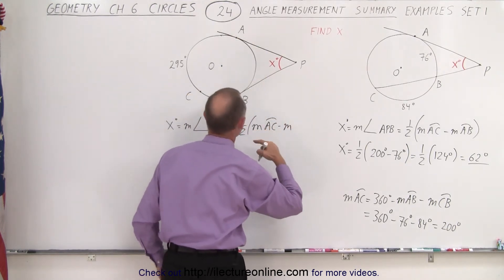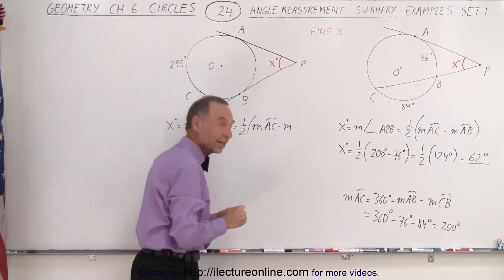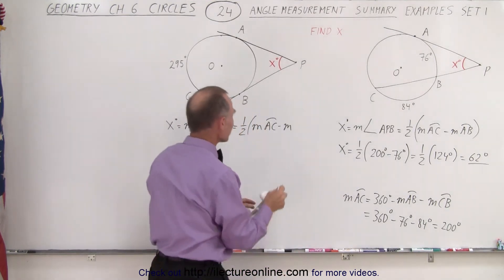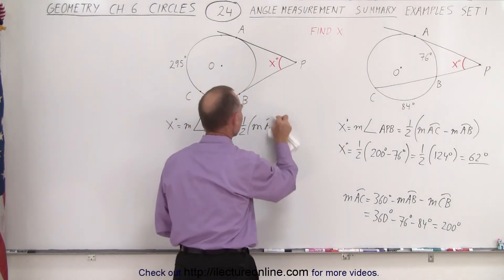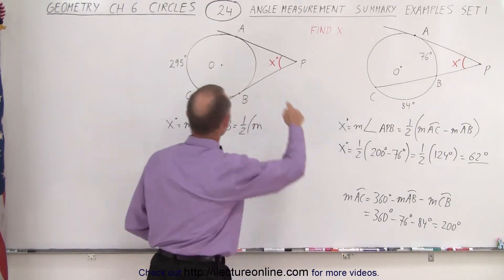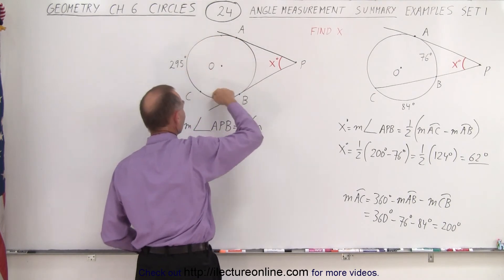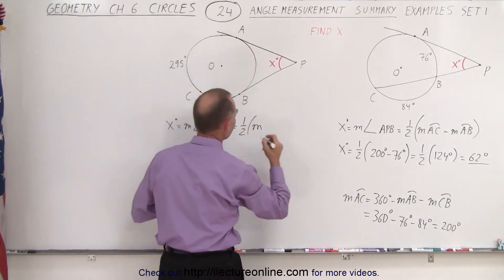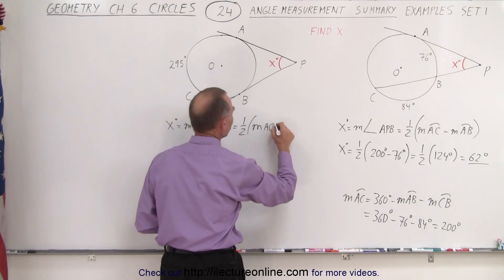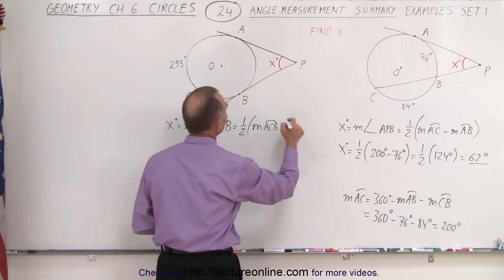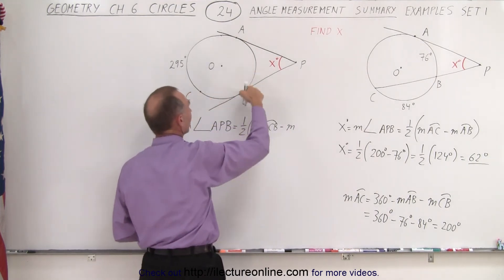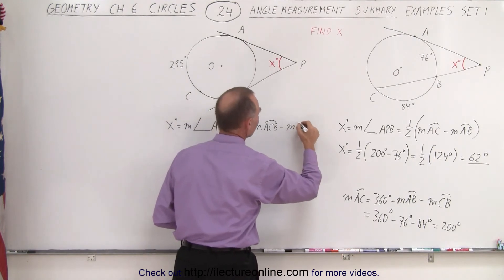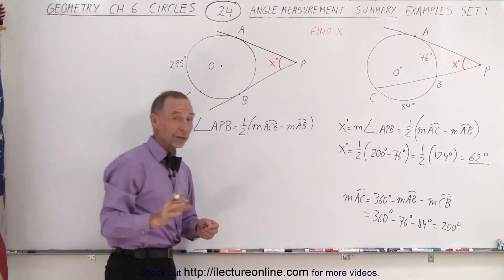Wait — let me correct that. We do want to take the entire arc length going from A to C to B on the outside — so A, C, B — minus the measure of the arc length from A to B on the short side. That's a better way to write it.